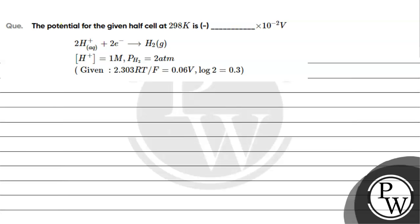This question asks for the potential for the given half cell at 298 Kelvin, which is minus dash into 10 to the power minus 2 volts. We have a reaction given here. The key concept for this question is the Nernst equation.